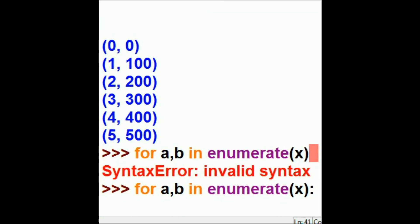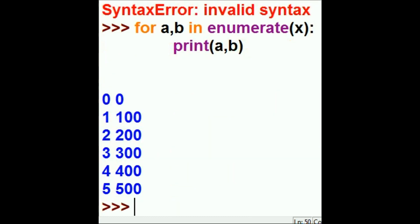For a, b in enumerate X, colon. Print a, b. Now it'll just list them out on the screen, but it's not going to put them into a tuple. And there they go.